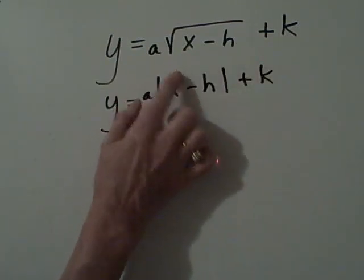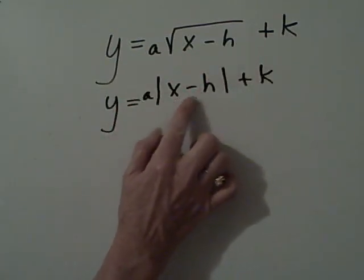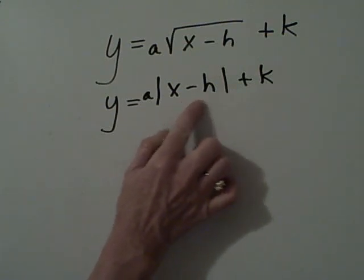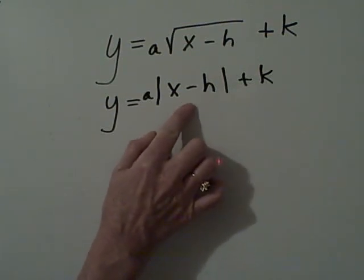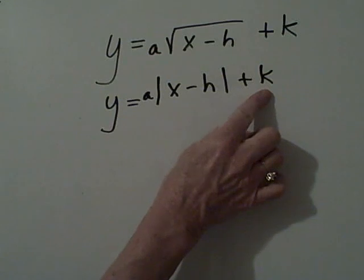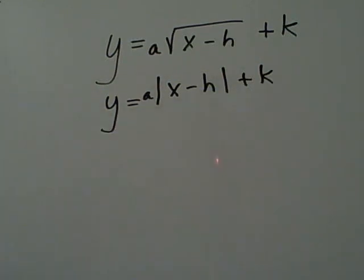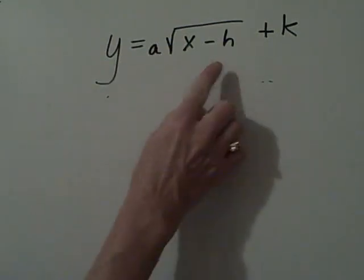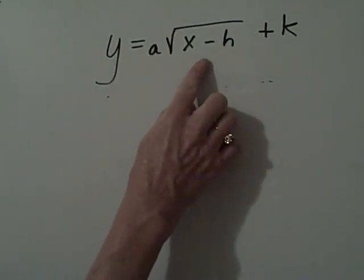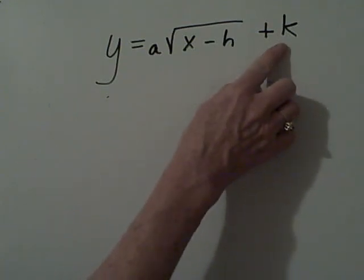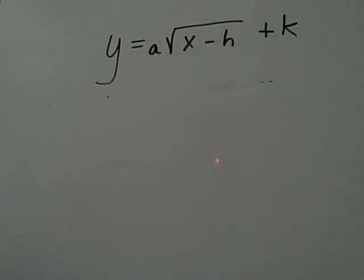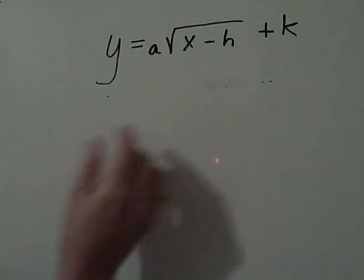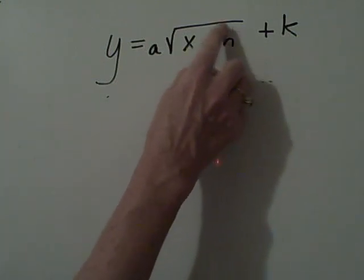When we transform an equation, if you remember in the absolute value, this shifted the graph left or right and this shifted the graph up or down. By the same token with our square root function, the h value is going to shift it left or right and the k value is going to shift the graph up or down. Again remember we always did the opposite.